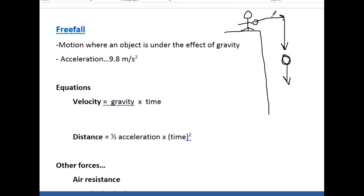And there's two equations we use. It's velocity under gravity. It's going to be this gravity, this thing right here, 9.8 meters per second squared, times the amount of time it's been in the air. If you want to do distance, it's one-half that acceleration, which is this one right here, times time squared.